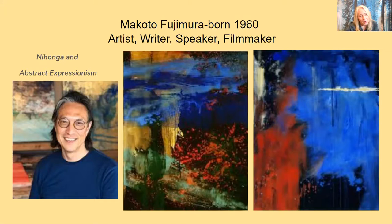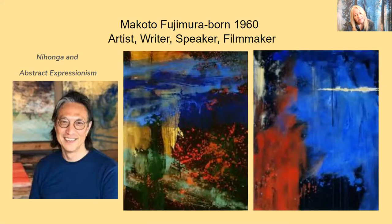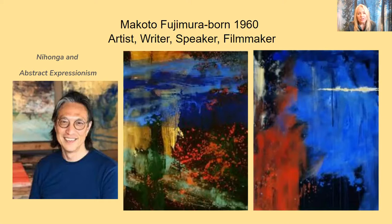My next person of interest is alive today, and his work can be seen in famous museums all over the world. His name is Makoto Fujimura. He was born in Boston, but his parents were from Japan and they moved back to Japan for a while, so he has dual citizenship from both countries. His artwork expresses some of the best of both Japan and America. He's very famous — he's an artist, a writer, a speaker, and a filmmaker.